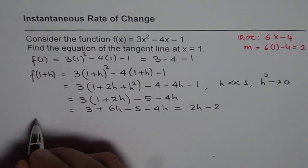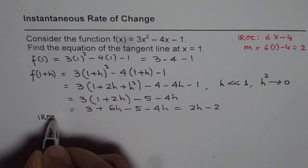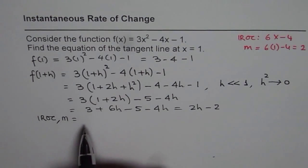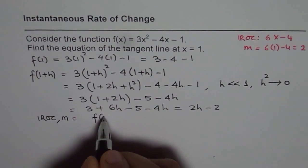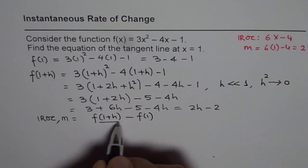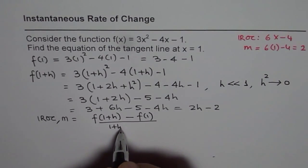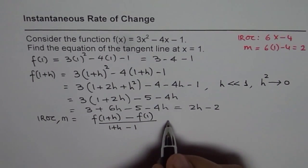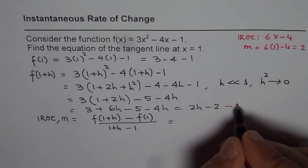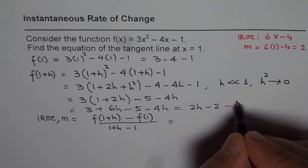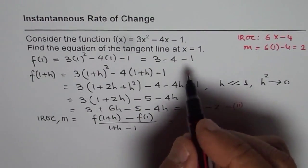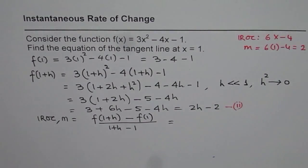Now, instantaneous rate of change will also give you a slope at x = 1, is actually f(1 + h) - f(1) divided by 1 + h - 1. We found here that f(1 + h) is this part. Let me write this as equation 2. f(1) is right there. Here, we can actually calculate this value.